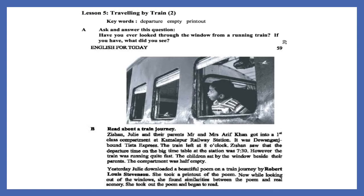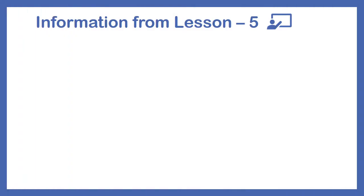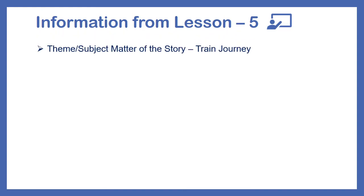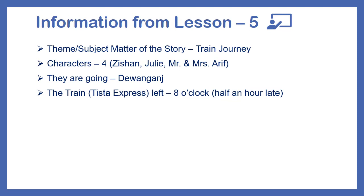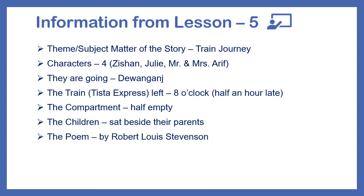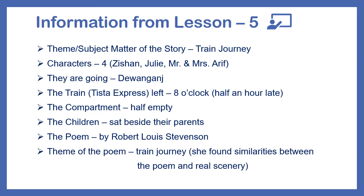Now the information we have got from Lesson 5: the theme or subject matter of the story is train journey. There are four characters — Jishan, Julie, Mr. and Mrs. Arif. They are going to Angonch by the Tista Express, which left the station at 8 o'clock but was half an hour late. The compartment was half empty. The children sat beside their parents. Julie downloaded a poem by Robert Louis Stevenson about train journey, and when she started reading it, she found similarities between the poem and the real scenery.